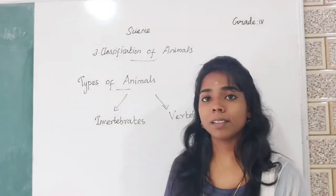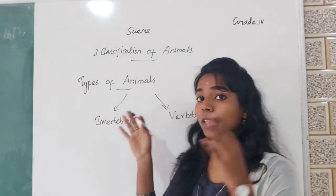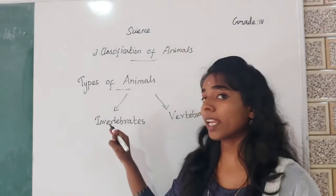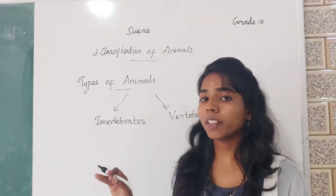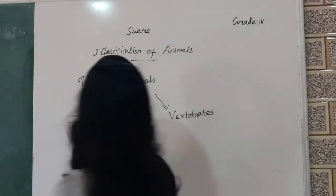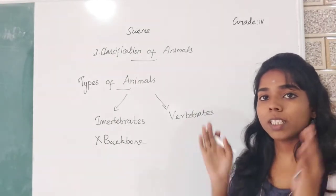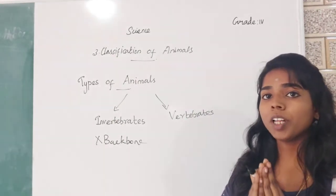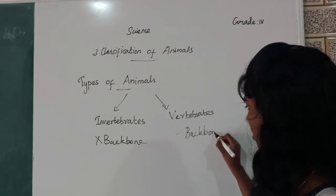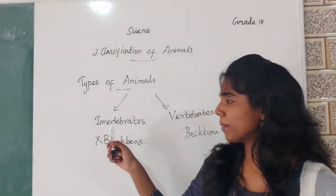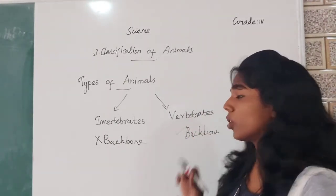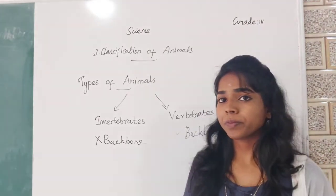What does it mean by invertebrates? Invertebrates are the group of animals that do not have a backbone. In invertebrates, backbone is absent, and in vertebrates, backbone is present. Did you remember?